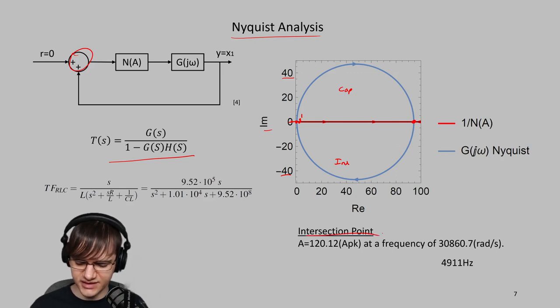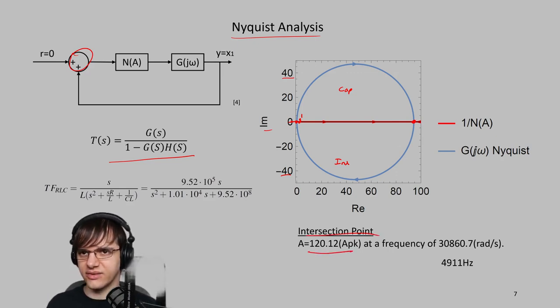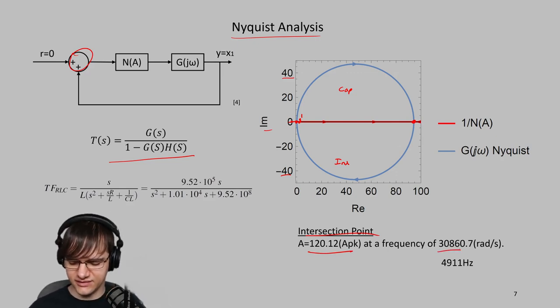And I've calculated the intersection point, which is at 120 amps and a frequency of 30,000 radians per second, which is 4.9 kilohertz.